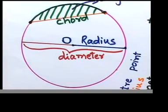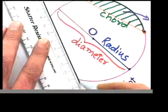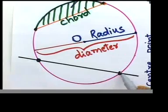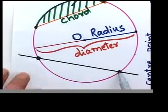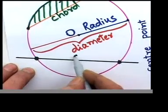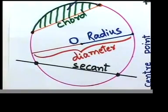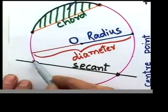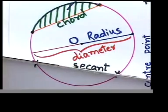Now let's look at another keyword. In your worksheet there is a line passing through the circle, which intersects the circle in two points — there is one point there and another point here. So if a line is passing through the circle and intersecting it in two points, we call that line a secant. Please learn the spellings — they are very important for literacy skills.